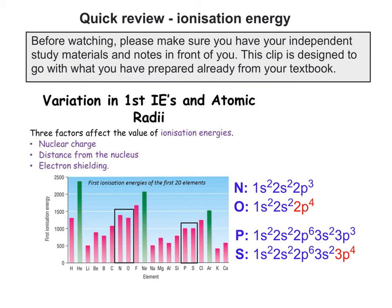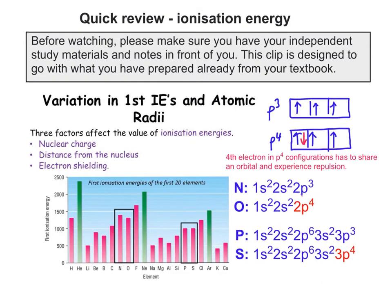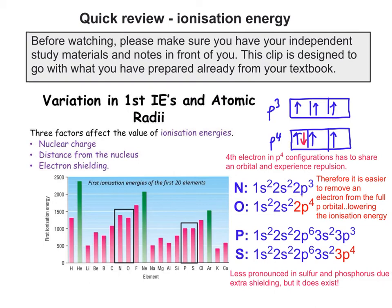Looking at nitrogen and oxygen, and phosphorus and sulphur — they're in similar positions to each other. If we look closely at the p3 and p4 configurations in box and arrow form, we can see that the fourth electron has to share an orbital and therefore experiences repulsion. Both of those electrons in that orbital experience repulsion, so one of them can be removed more easily, and therefore the ionisation energy decreases.